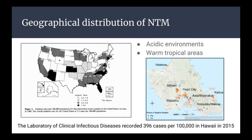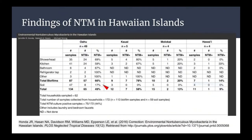The Laboratory of Clinical Infectious Diseases actually reported that Hawaii has the highest prevalence in the entire United States — about 396 cases per 100,000, which is about 3,000 cases annually of people infected by this. It seems to be quite common, and somehow it's not very well known.